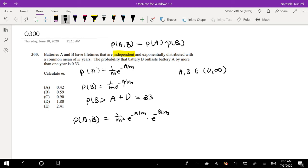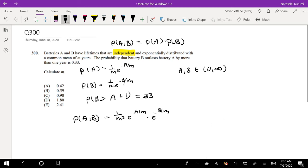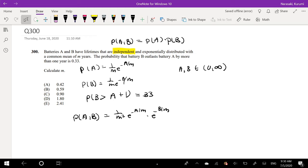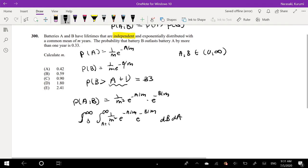Okay, so knowing that, all we have to do is set up our double integral, and we're good to go. Let's integrate with respect to B first, and that would mean the B limit would be A plus 1. B is greater than A plus 1, so B lies between A plus 1 and infinity. And this is just 0 to infinity for A, the limit. Let's just integrate this.